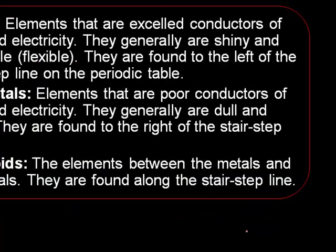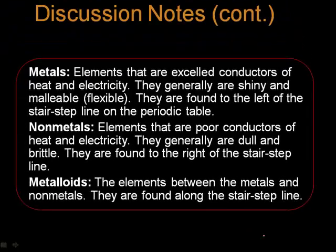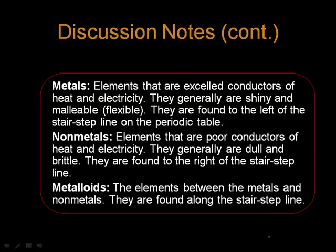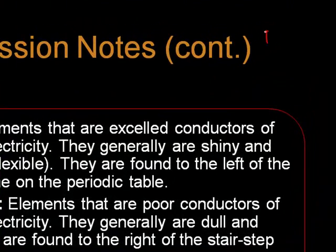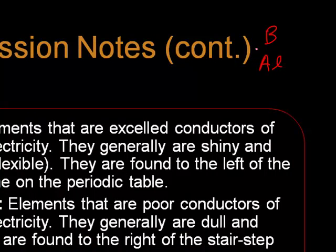Metals are elements that are excellent conductors of heat and electricity. They are flexible, malleable, and they're also able to be stretched into wires. They're found on the left of the stair step line on the periodic table. The stair step line goes between boron and aluminum. So if you take out your periodic table, it goes down like this. The ones to the left side are the metals.